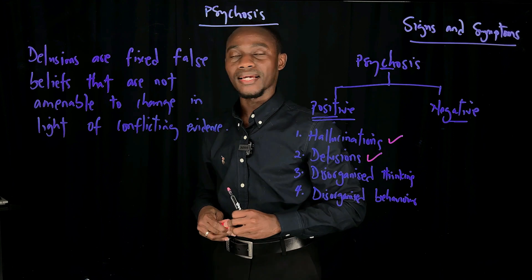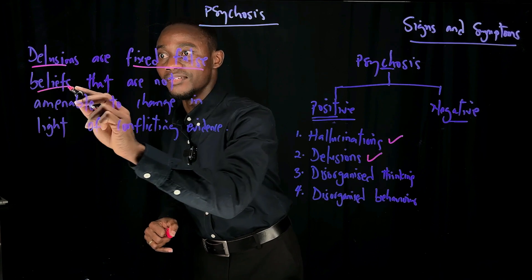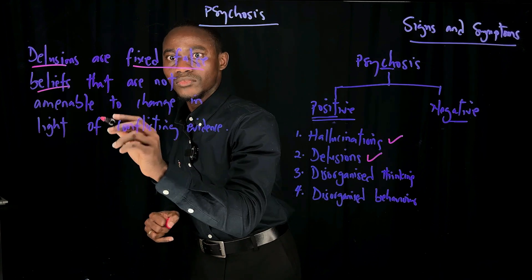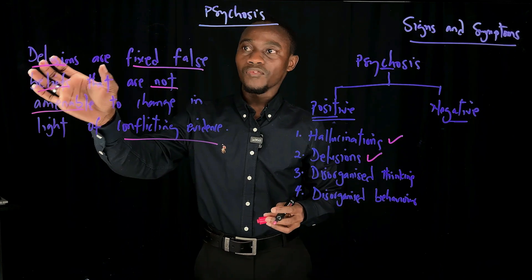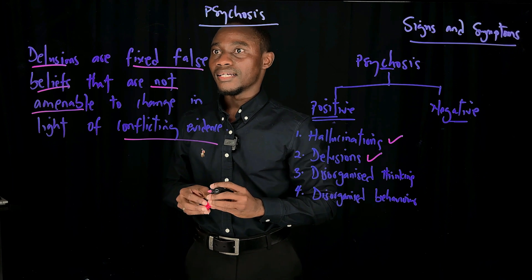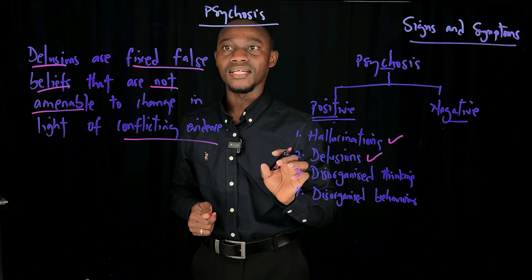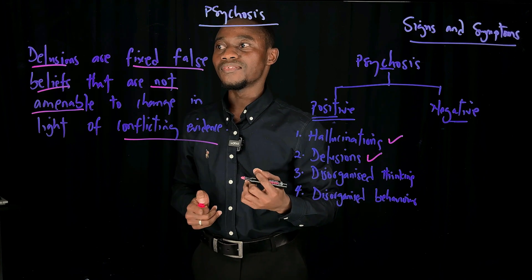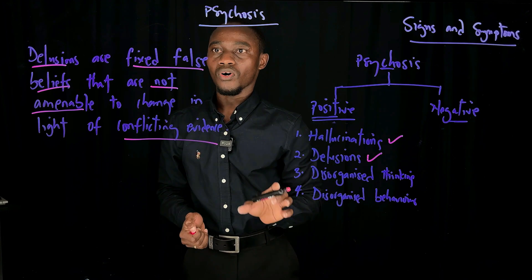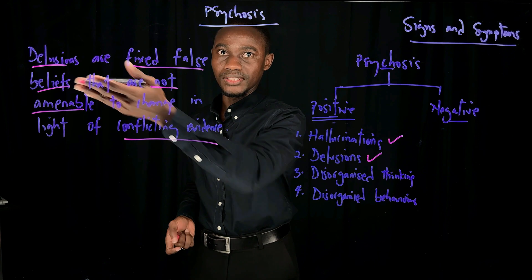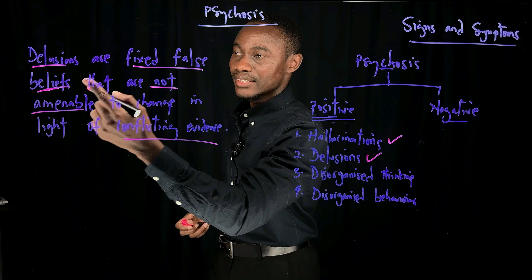Let's underline the key words. Delusions are fixed false beliefs that are not amenable to change in light of conflicting evidence. When we speak of delusions, you need to understand that they are about beliefs. These beliefs are fixed — meaning they are unwavering, they don't change — and these beliefs are typically false. Even when you present conflicting evidence to the person, their delusions are still not going to change.